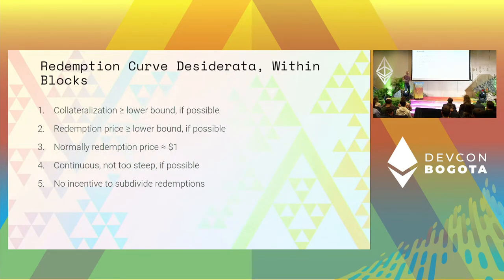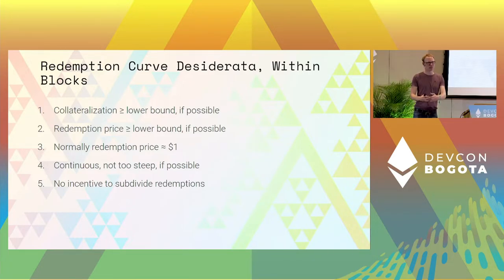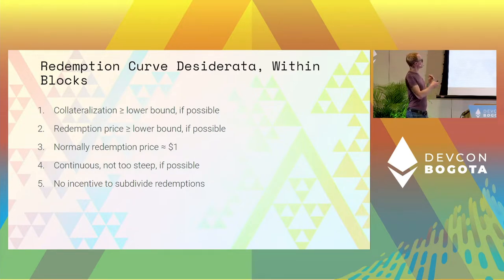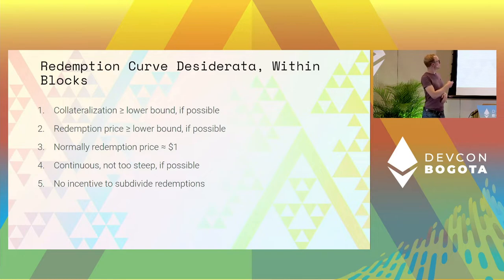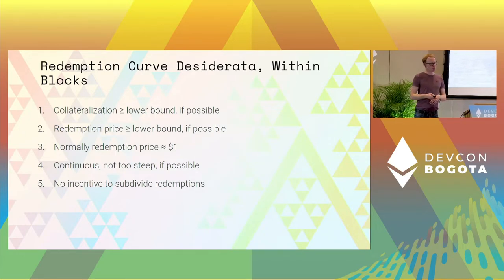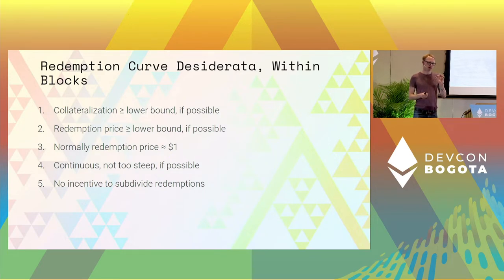Let's think about what we would ideally want of our redemption curve. First, your collateralization should stay above some lower bound — your redemption curve should not exhaust your reserve if at all possible, to enable the system to recover later. You also want the redemption price to stay above a lower bound if possible, to support the peg at least to some degree. You want the stable coin to be stable at a dollar. You probably want continuity — you don't want these abrupt crashes. The main reason for that is to prevent speculation, because discontinuous crashes are something people could speculate on very easily, leading to all kinds of market upheavals.